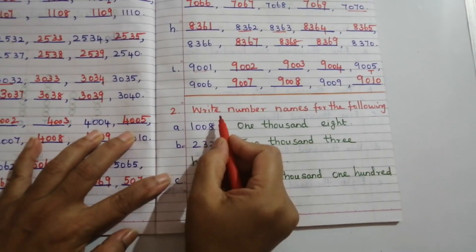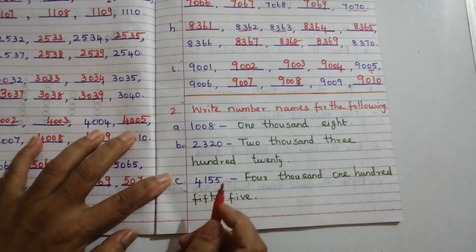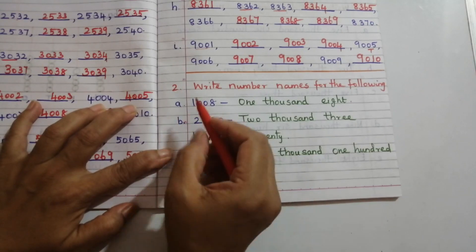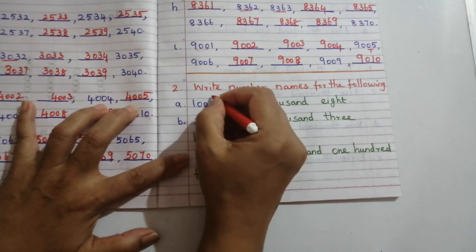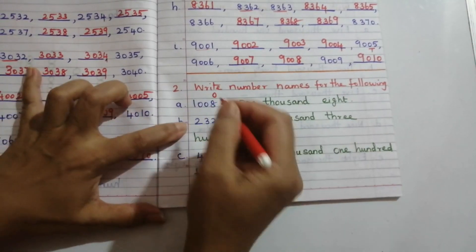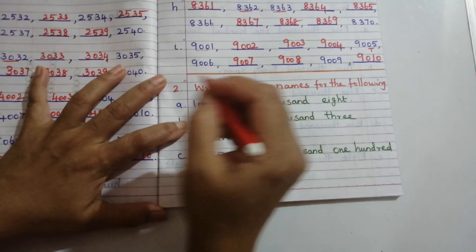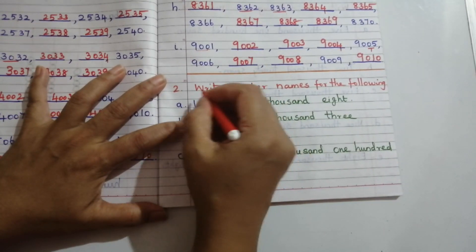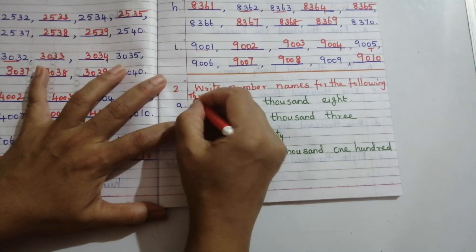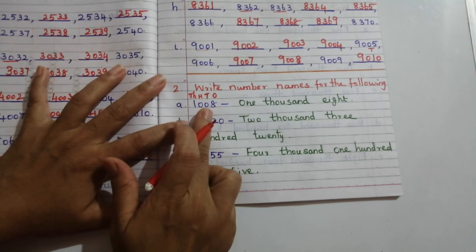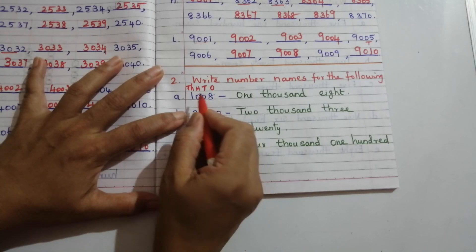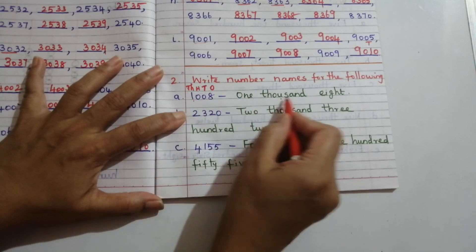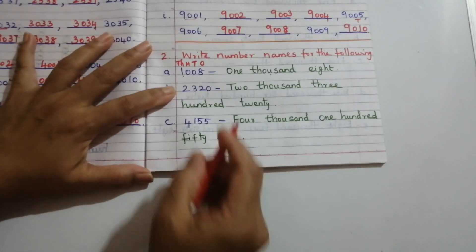Second problem: write number names for the following numbers. To write number names, first write the place values: ones, tens, hundreds, and thousands. Problem A: 1008 — there is no value in hundreds and tens place, so we write 'one thousand eight.'